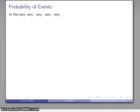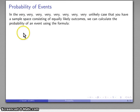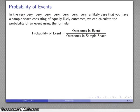Every now and then we will actually get a sample space that consists of equally likely outcomes. Most of probability computation centers around trying to get your sample space to consist of equally likely outcomes by thinking about how you describe that sample space — but that's most of another course. If our sample space does consist of equally likely outcomes, we can calculate the probability using a simple formula: the probability of an event equals the number of outcomes in that event divided by the number of outcomes in the sample space.